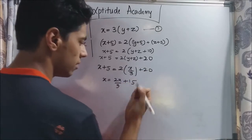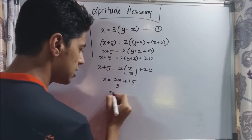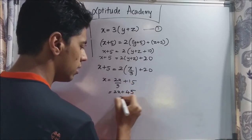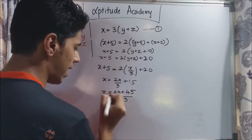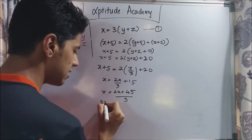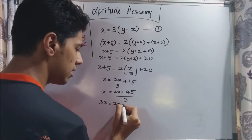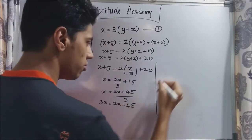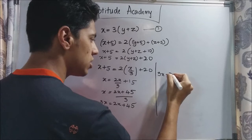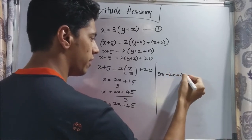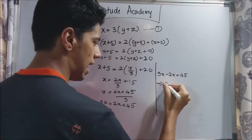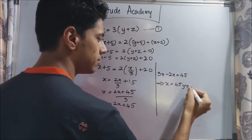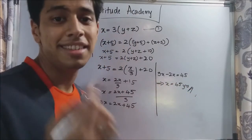Taking five to the other side: x equals two x by three plus fifteen. Using LCM, this gives three x equals two x plus forty-five. So three x minus two x equals forty-five, which implies x, the father's age, is forty-five years.